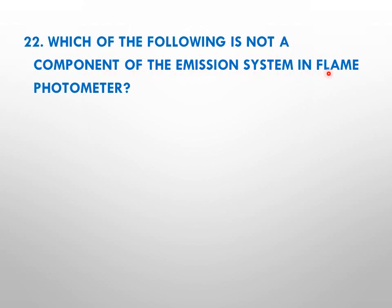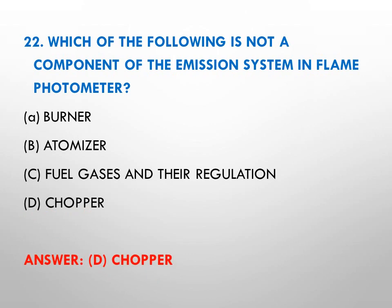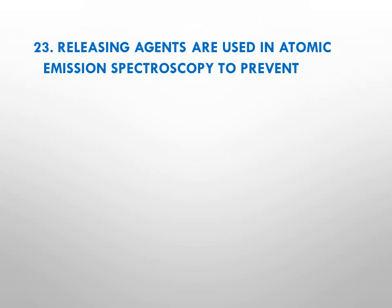Question number twenty-two: which of the following is not a component of the emission system in a flame photometer? Options: A burner, B atomizer, C fuel gases and their regulation, D chopper. The right answer is D, that is chopper. A chopper is not a part of a flame photometer.